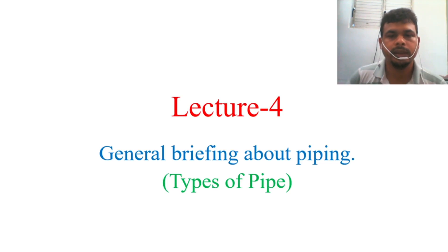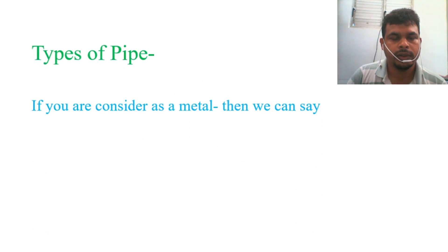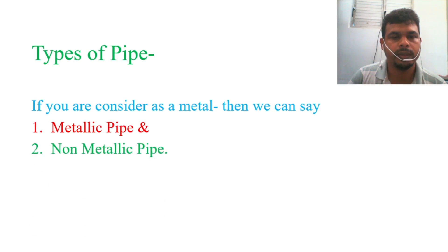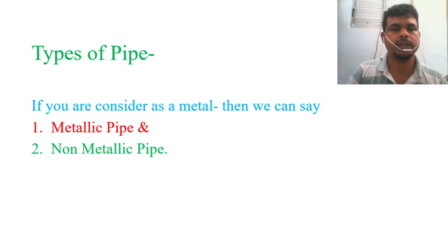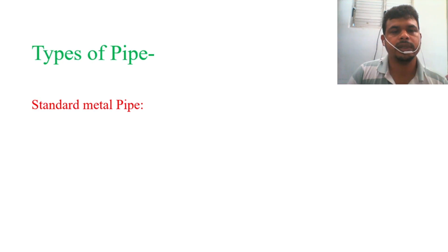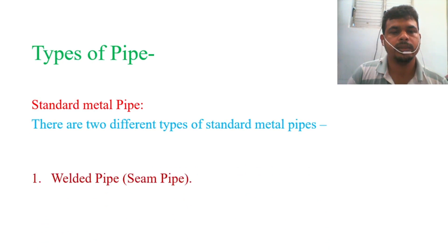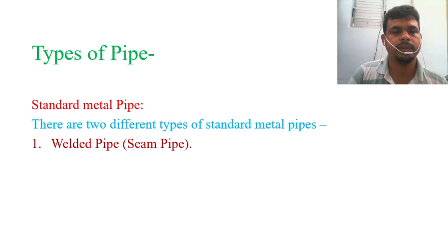So in this lecture, I will share some information about types of pipe. If you consider the material, then we can classify pipes as metallic pipe and non-metallic pipe. For standard metallic pipe, there are two different types: one is a welded pipe — also called seam pipe — and one is a seamless pipe.